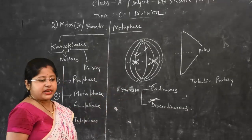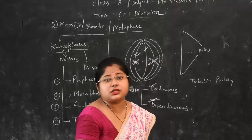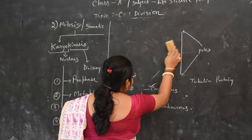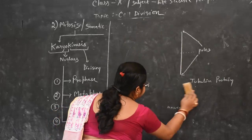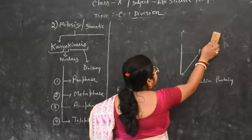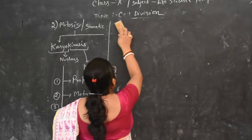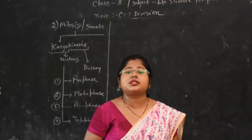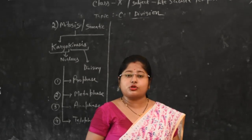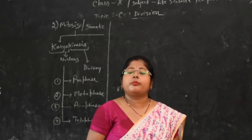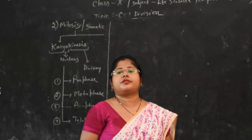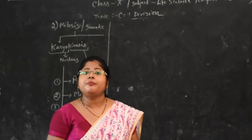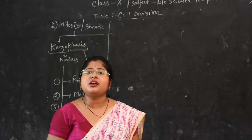This ends the Metaphase. An important point about Metaphase is that it is the phase of Karyokinesis where the exact number of chromosomes in a cell can be easily counted.